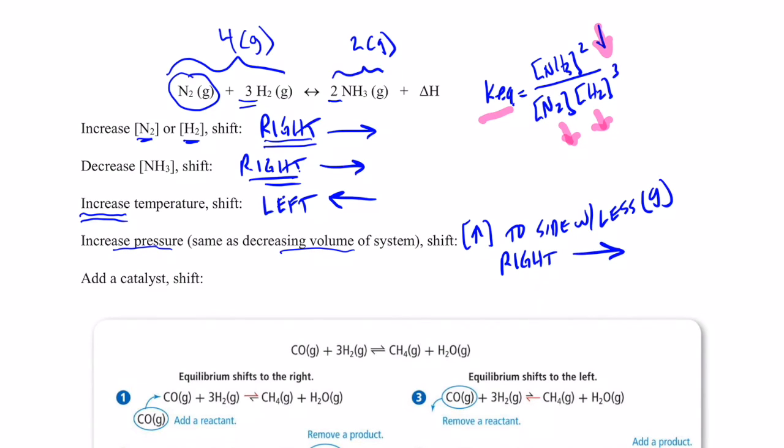And that would be the ammonia side, which is on the right. So, we would say that would shift right. And if I increase the pressure, I would produce more ammonia gas.